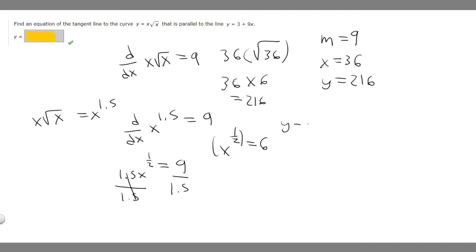The point-slope formula tells us that y minus y1 is equal to m times x minus x1. And so y1 and x1 are just our x and y coordinates. Let's just plug it in. So y minus 216 is equal to 9 times x minus 36.